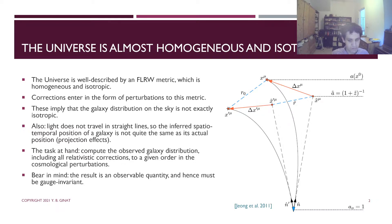Projection effects is the term used to describe this distinction. The observed galaxy distribution is of course a gauge-invariant quantity because it doesn't depend, as an observable, on the coordinate system that the observer uses.